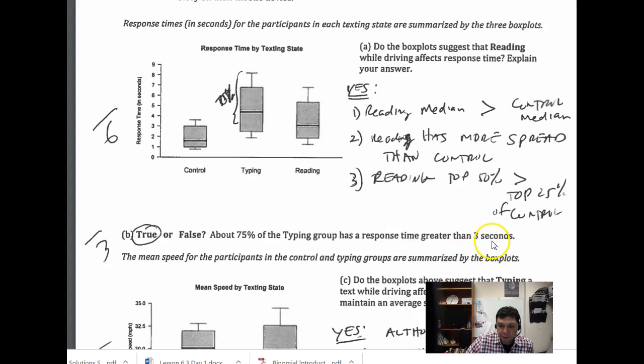Second question B: About 75% of the typing group has a response time greater than 3 seconds. This is the typing group here. Again, remember box plots are broken into quartiles: 25%, 25%, 25%, and 25%. So the top three here, you see this is 75%, so about 75% of them have a response time greater than 3 seconds.